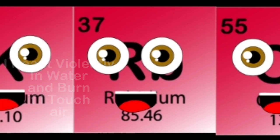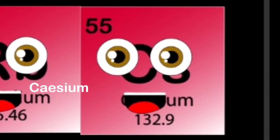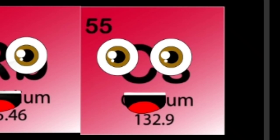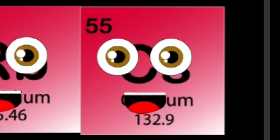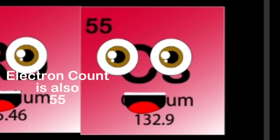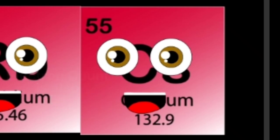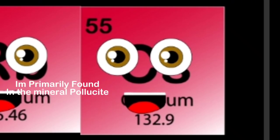I react violently in water and burn if I touch air. You can learn more about me past my periodic square. I'm a cesium atom, my symbol is Cs. My atomic number is 55, that's my proton count. When my 78 neutrons are added to that, it equals my atomic mass in my nucleus.